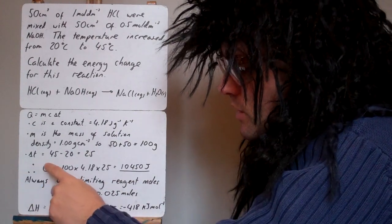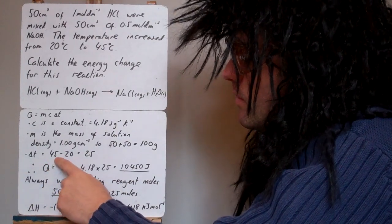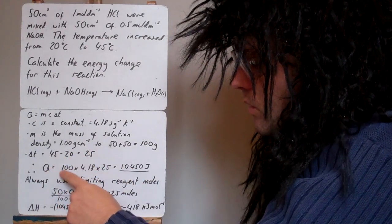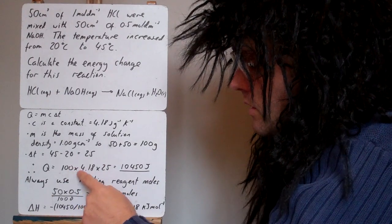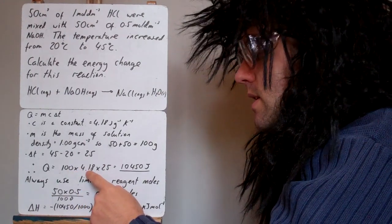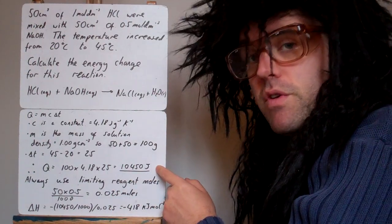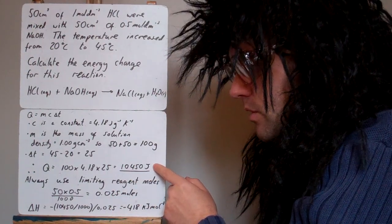Delta T is the change in temperature, so it ended up at 45, began at 20, so it's a change of 25. So we put that into the equation then Q equals 100, which is the M, times 4.18, the C, times by the delta T, 25, which gives us 10,450 joules. So that answer will always come out in joules.